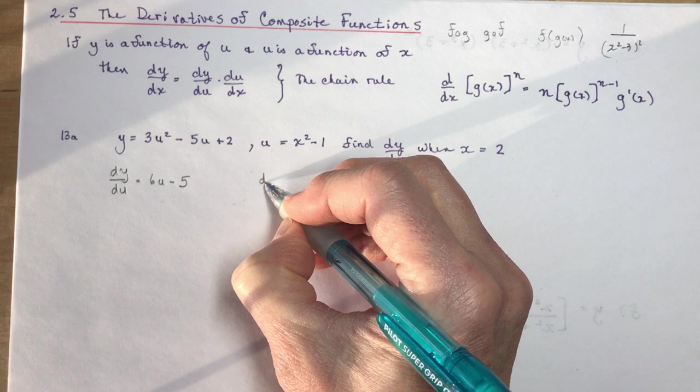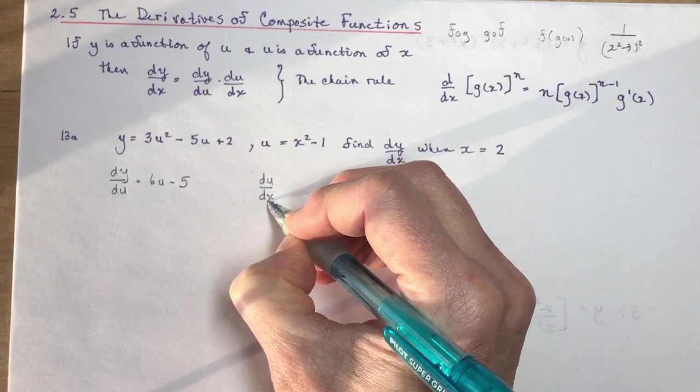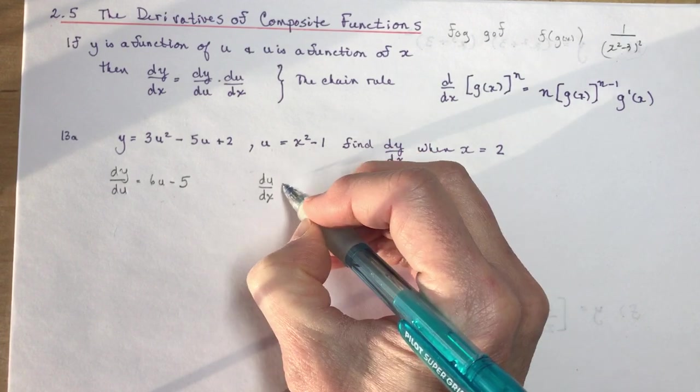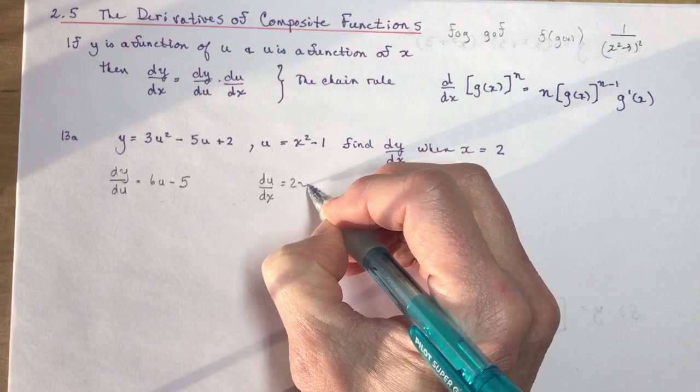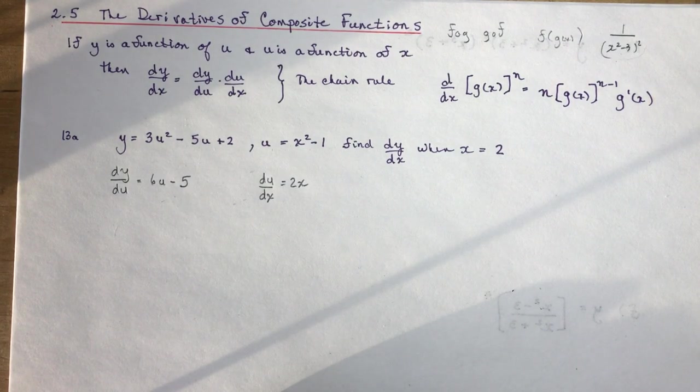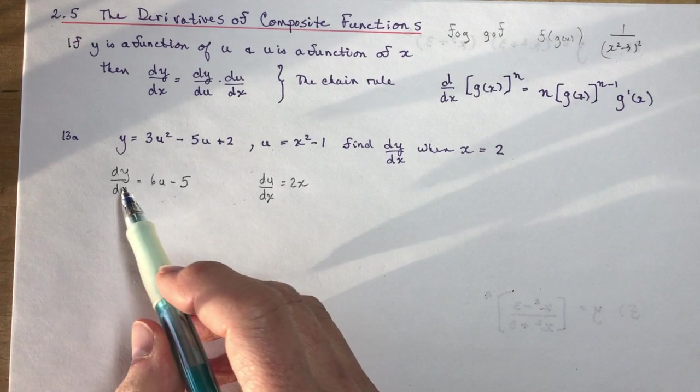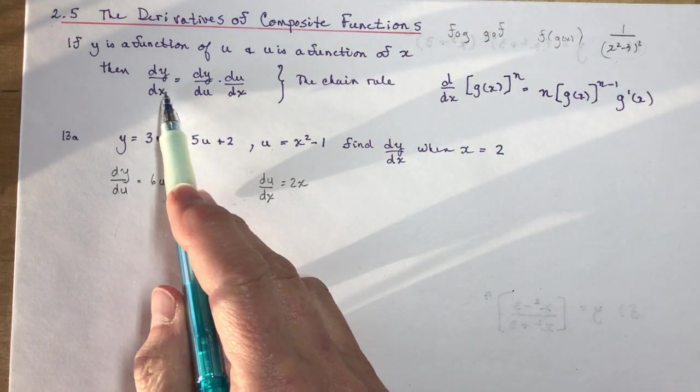And what's derivative of u, the function u with respect to x. So du/dx, the derivative of this, is just 2x. So that's pretty easy. Now the problem comes when you're trying to evaluate it at a certain point. Now remember that dy/dx is going to be 6u - 5.